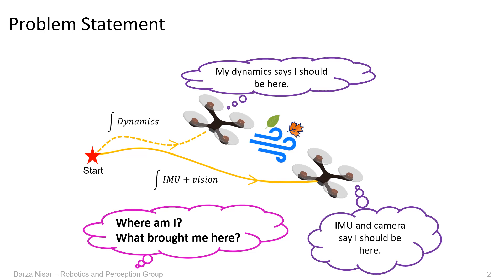One of the main challenges of including robot dynamics in a VIO problem is that while the system dynamics predicts one motion, the camera and the IMU measure another. In our work, we propose for the first time to resolve this conflict by including unknown external disturbances in the dynamic model and then jointly estimating them with the robot state.